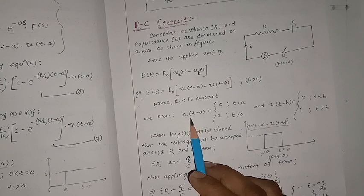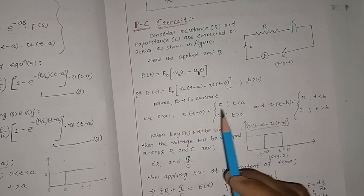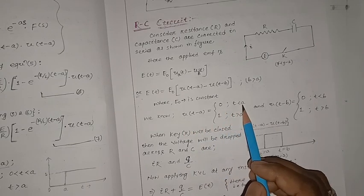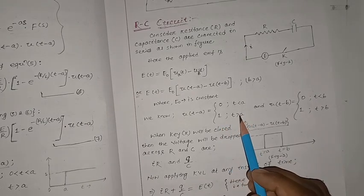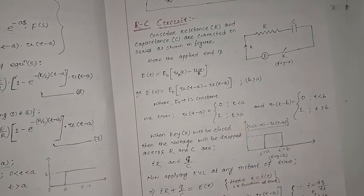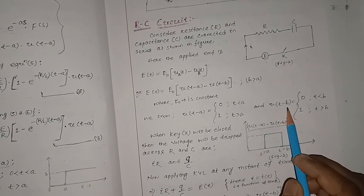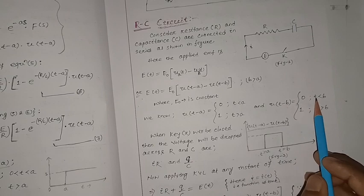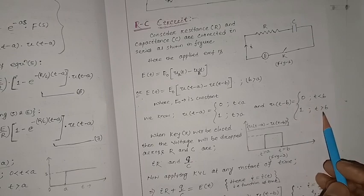We know that the unit step function u(t−a) equals zero when t is less than a, and one when t is greater than a. Similarly, u(t−b) equals zero when t is less than b, and one when t is greater than b.